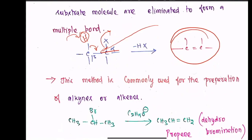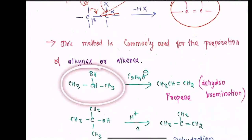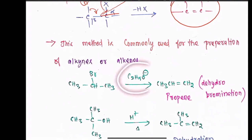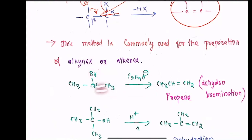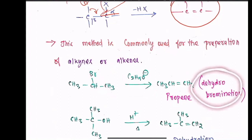Here is an example with bromopropane. With a base such as C₂H₅O⁻, hydrogen and bromine are removed. This is called dehydrobromination.